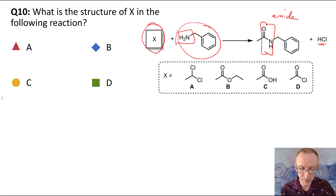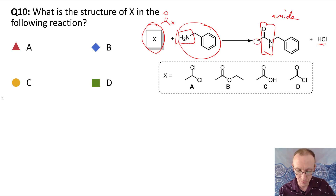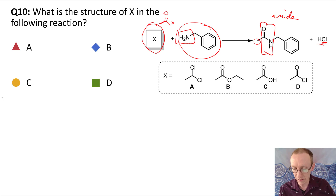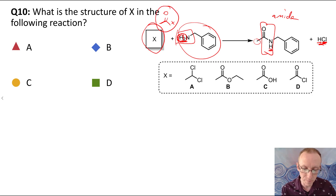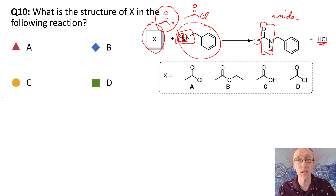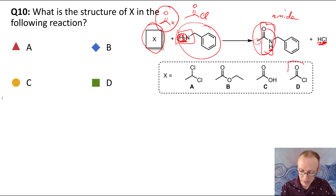We're going to end up with chlorine coming from this component to make the HCl byproduct, because in going from the amine to the amide, we've lost one of the two hydrogen atoms to create this byproduct. So overall, this acid derivative must be the acid chloride. We know that acid chlorides react very quickly with amines to give amides like this. So the acid chloride is D.